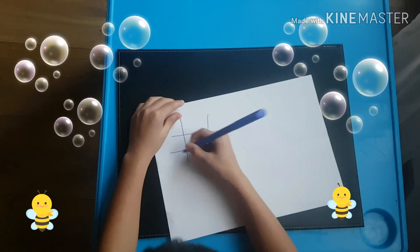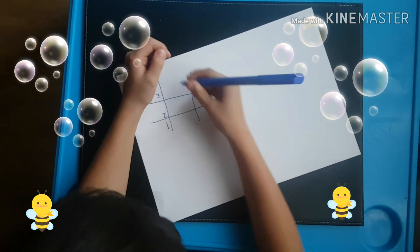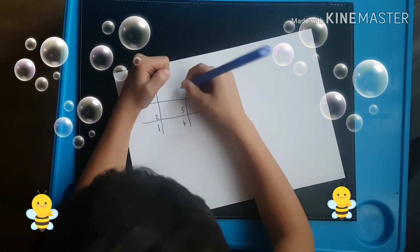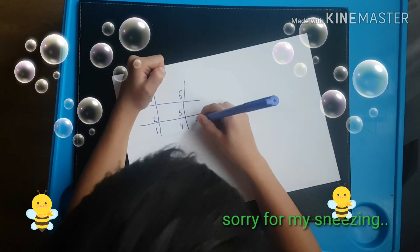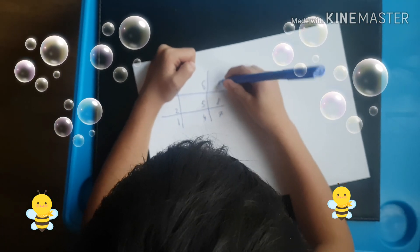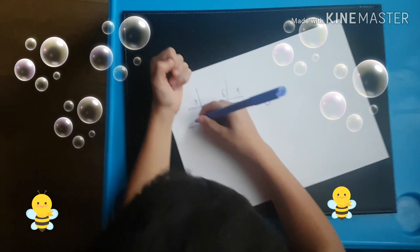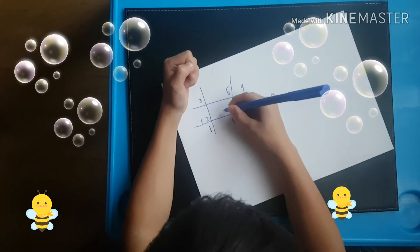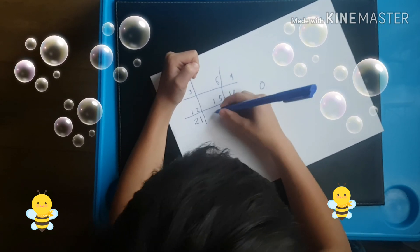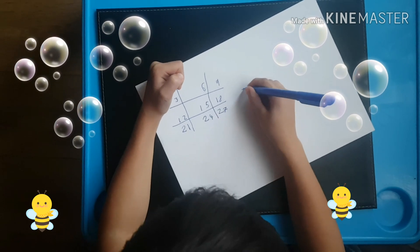Then you write the numbers 1, 2, 3, 4, 5, 6, 7, 8, 9, and then 0. After that, you write 1, 1, 1, then 2, 2, 2, and then 3.